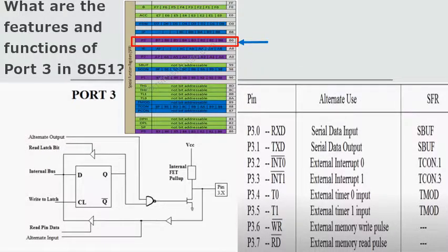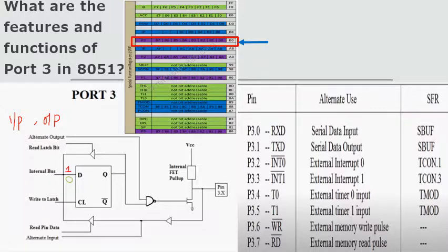Let us now discuss about Port 3 operation. Port 3 can operate as input port as well as output port. To act as input port, a 1 has to be written onto the latch; to act as output port, a 0 has to be written to the latch. Its function is much similar to Port 1's operation. In addition to input-output port operation, Port 3 has some special operations: the 8 pins can be used as alternate pins associated with the special function registers.